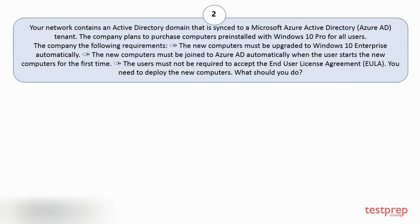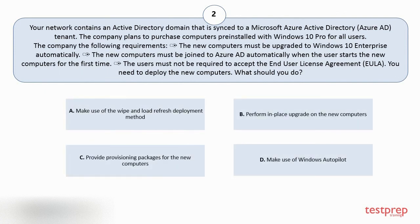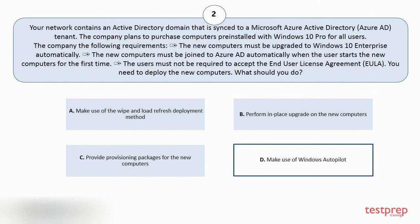Your options are: A. Make use of the Wipe and Load Refresh deployment method. B. Perform in-place upgrade on the new computers. C. Provide provisioning packages for the new computers. D. Make use of Windows Autopilot. The correct answer is option D.